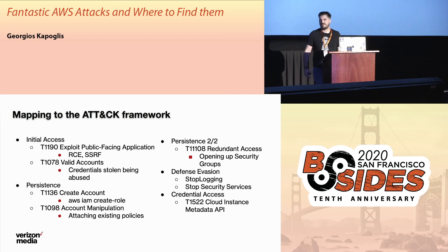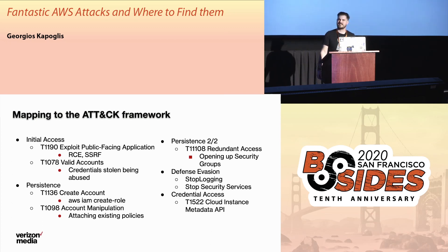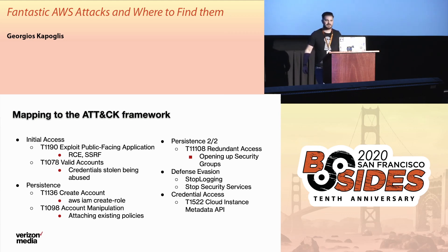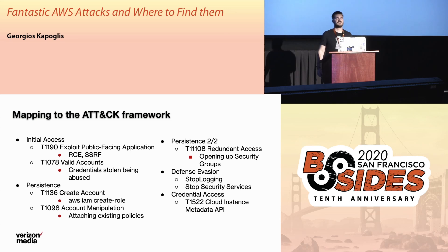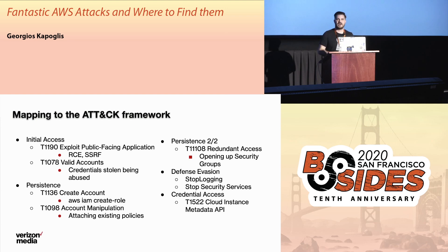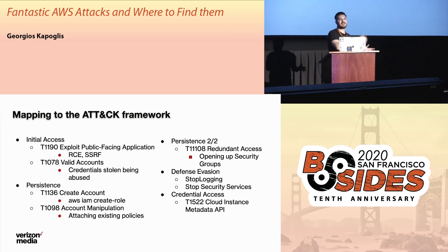For initial access — the first thing you're going to see in an attack — it's going to be how they get in. Even though we might have the best tools in cloud security to protect our environment, we're still going to have issues on the host level. You're going to see RCEs, SSRFs — anything that gives you code execution or command line execution on a server can give you the initial foothold in the AWS account.